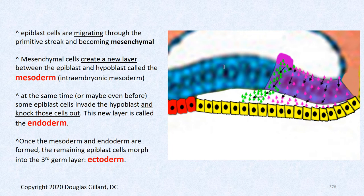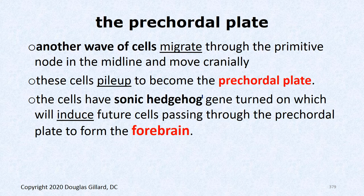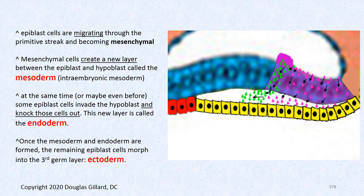In a sagittal view cartoon: epiblast cells are going through different parts of the primitive streak. Some have already replaced the lower cell layer, forming the endoderm layer. The middle layer fills with mesoderm. Some cells streak forward to form the pre-chordal plate. Once all this occurs, the trilaminar disk has been created. The last thing we talked about is the pre-chordal plate, where another wave of cells goes forward and piles up.